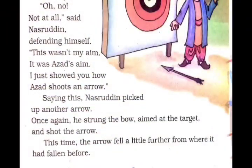'Oh no, not at all,' said Nasruddin, defending himself — apne aap ko bachate hue. 'This was not my aim — yeh mera aim nahi tha. It was Ajat's aim — yeh to Ajat ka aim tha. I just showed you how Ajat shoots an arrow — main to dikha raha tha ki Ajat kis tarah se teer chalata hai.'